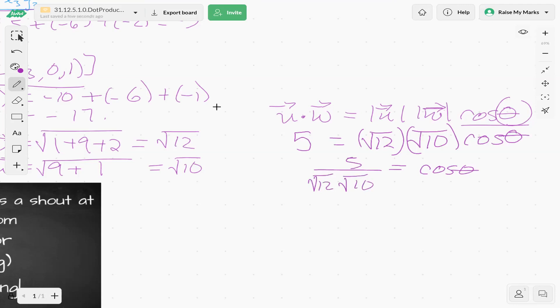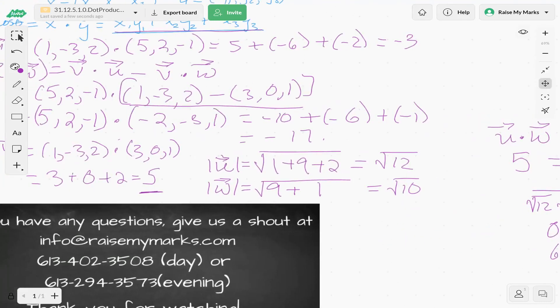Let's punch that into our calculator and see what we get. 5 divided by square root of 12 times square root of 10. And we end up with 0.456, approximately, the cosine of theta. We're going to take cosine inverse. And we get theta equals 62.84 degrees. So that's the angle between our vectors u and w. So we've used both definitions of the dot product to find that.